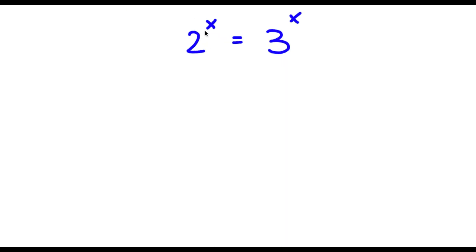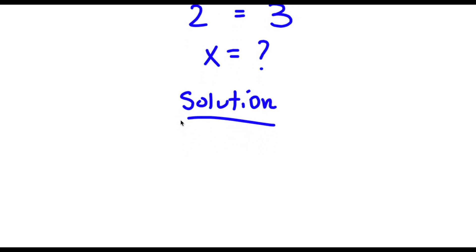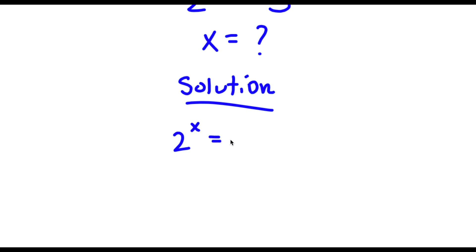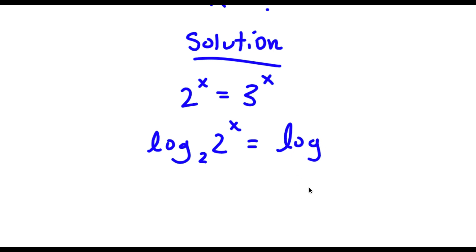Alright, so now I have 2 to the power of x is equal to 3 to the power of x. I want to find the value of x. For my solution, I'll first start with 2 to the power of x is equal to 3 to the power of x. Now I'm going to take the log of base 2 on both sides. So I have log base 2 of 2 to the power of x is equal to log base 2 of 3 to the power of x.